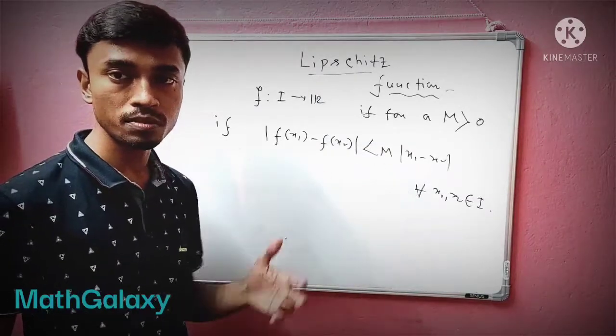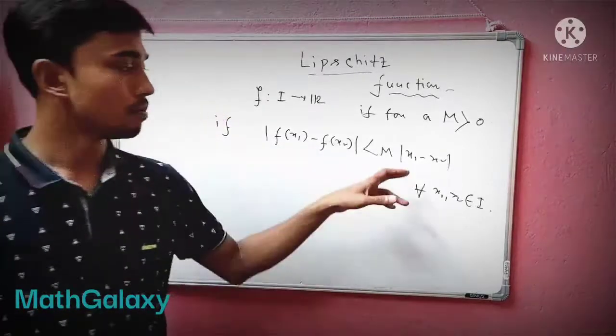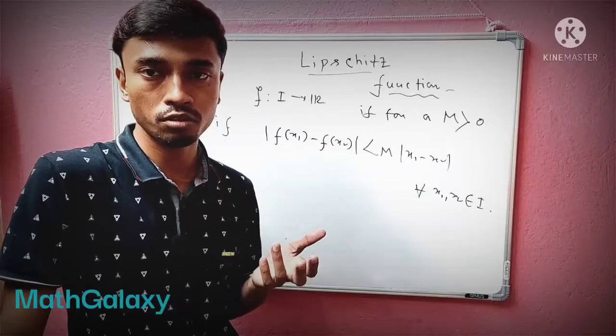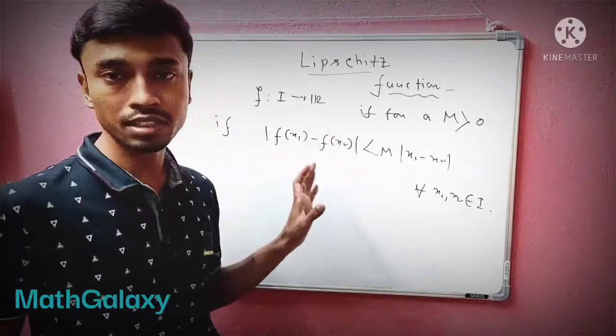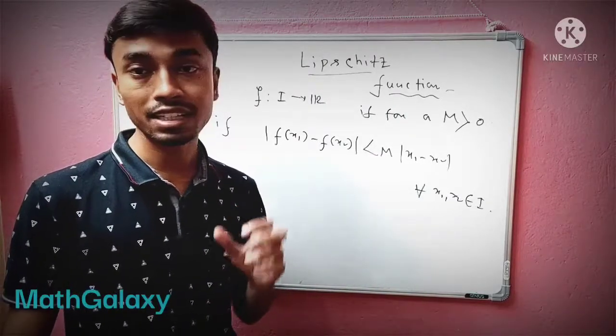|x1 - x2| means the difference between those points on the domain. Because x1, x2 are basically real numbers, you can always find the difference of those points. So if that condition is satisfied by the function, then you say the function is basically a Lipschitz function.